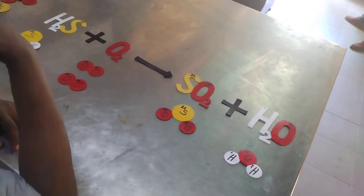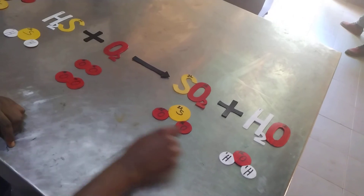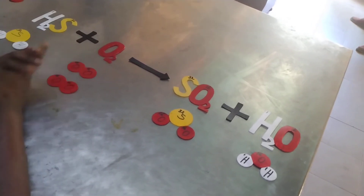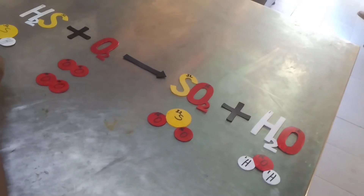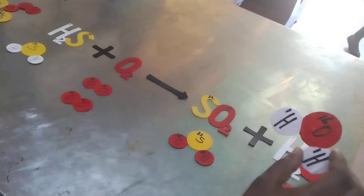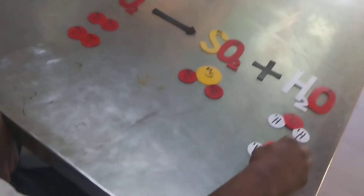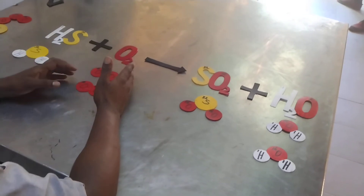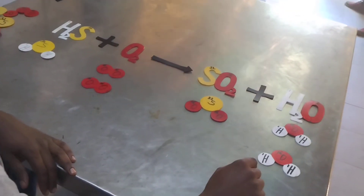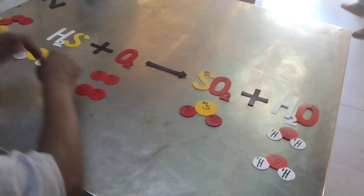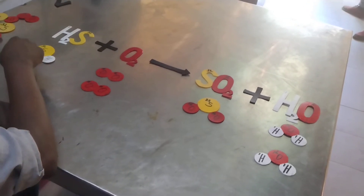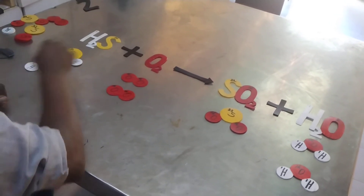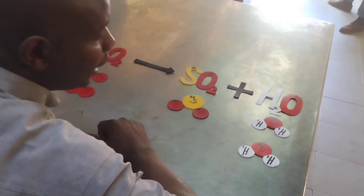We still have a dilemma, so using trial and error, we add one more oxygen to the water side. Now we have four oxygen atoms on each side — oxygen is balanced. However, this has changed the hydrogen count: we now have four hydrogen atoms on the product side but only two on the reactant side. To fix this, we add another molecule of hydrogen sulfide, giving us four hydrogen atoms on each side.